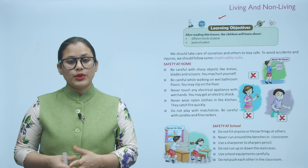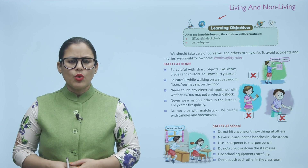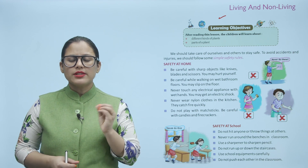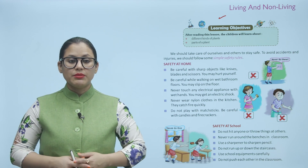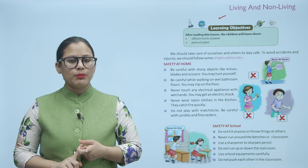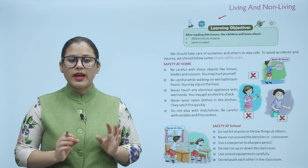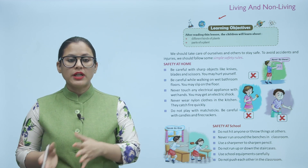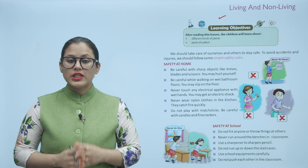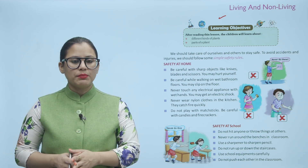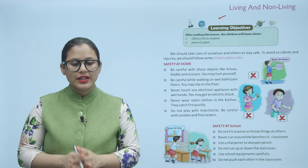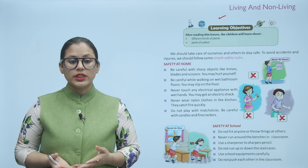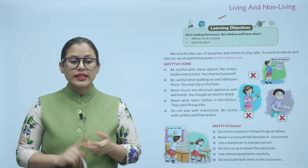Accidents kahi bhi, kisi ke saath bhi ho sakta hai, isliye hum sabhi ko thoda careful rehne ki zarurat hai. Har jaga kuch safety rules hote hain — bahut simple safety rules. Ghar ki baat karein toh: sharp objects jaise knives, blade, scissors — in se doori banae rakhein, ya carefully handle karein. Wet bathroom mein be careful — aap fissal sakte hain. Kisi bhi electrical appliance ko wet hands se na touch karein. Nylon clothes na pehnen kitchen mein — inme aag jaldi lag jaati hai. Mattress sticks ke saath na khelein; candles aur firecrackers ko carefully handle karein.